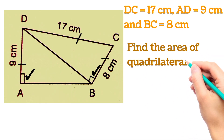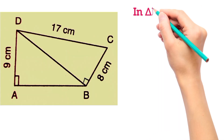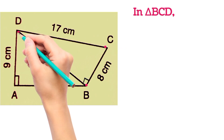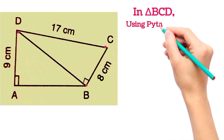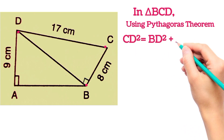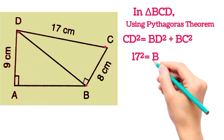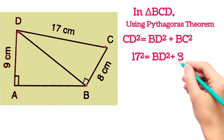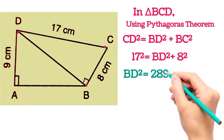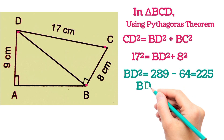In triangle BCD, by using the Pythagorean theorem: CD² = BD² + BC². So 17² = BD² + 8², which gives BD² = 289 − 64 = 225, therefore BD = 15.